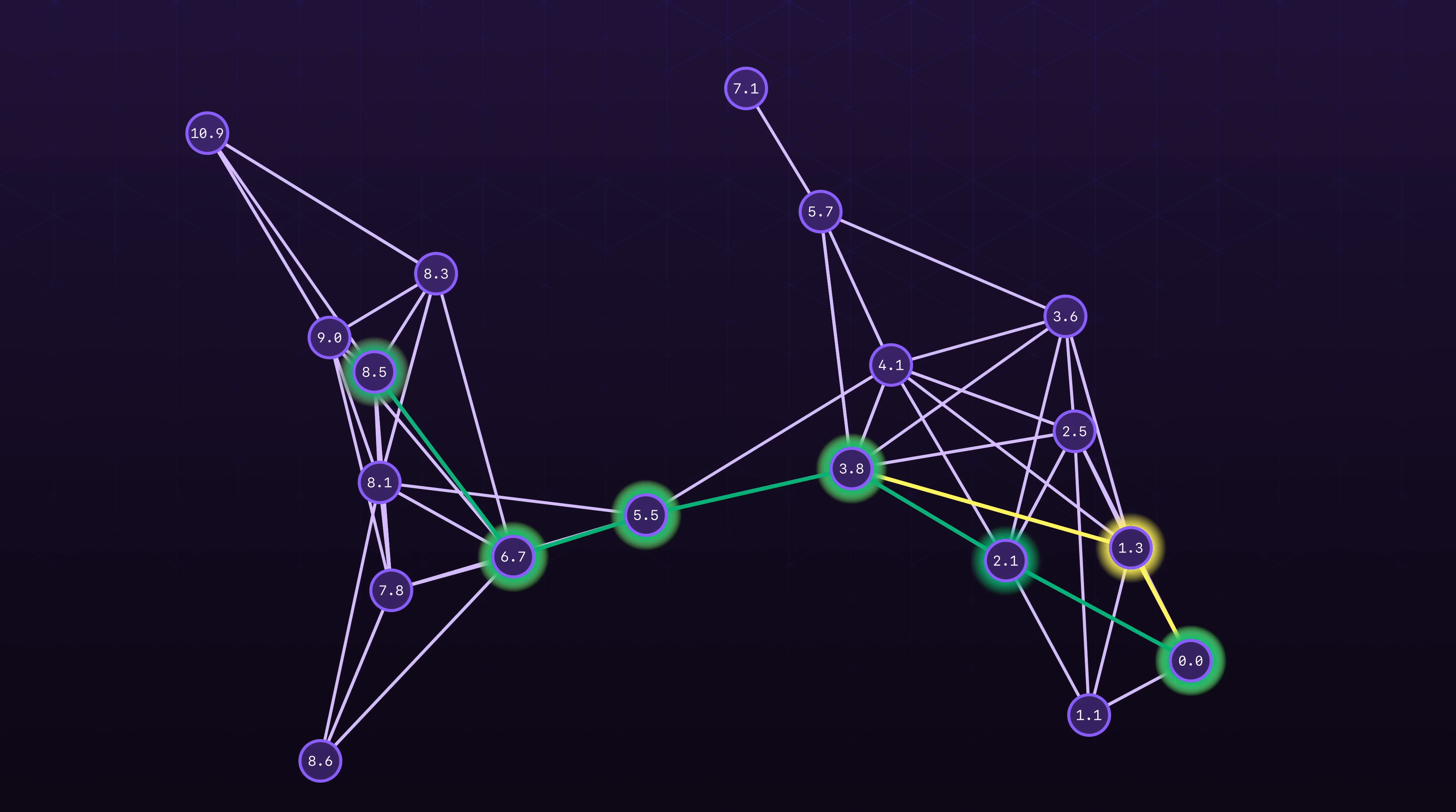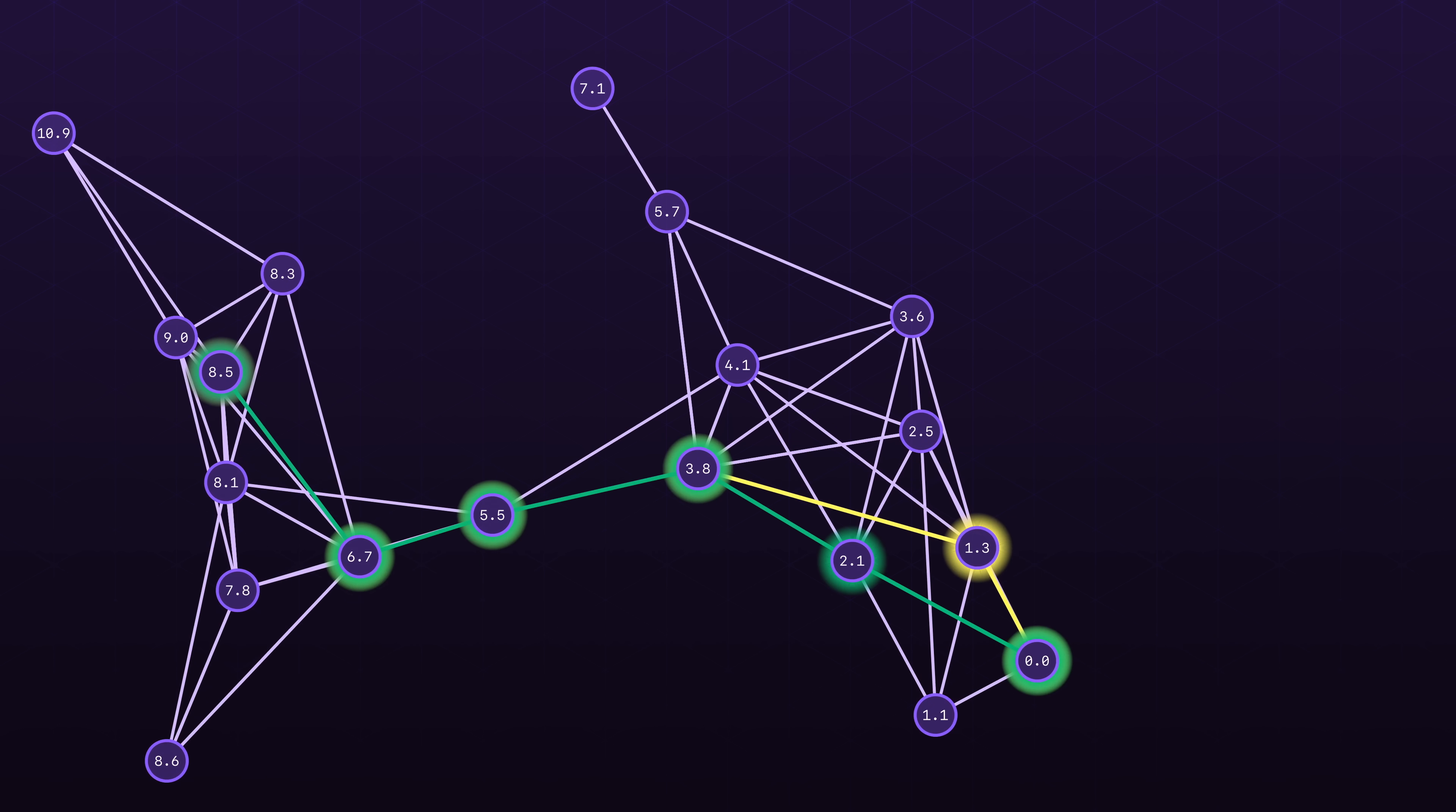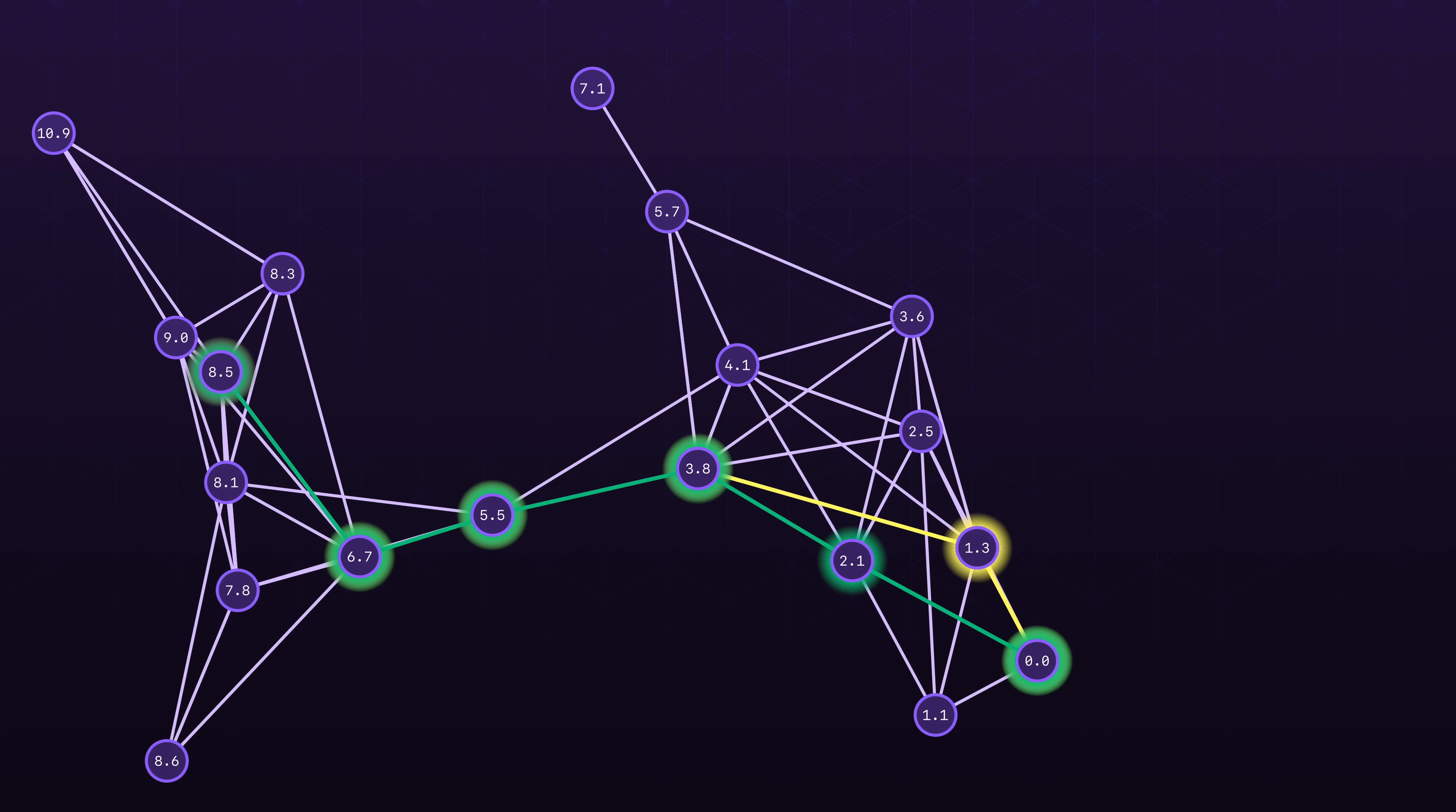One problem with this approach is we don't really keep track of the cost it takes to traverse the path. All we care about is that we are getting closer to the goal. The true optimal path here has to go through a node that doesn't get us as close to the goal as possible, which our greedy algorithm just completely misses.